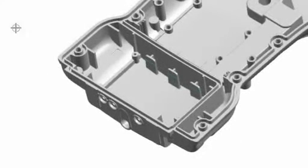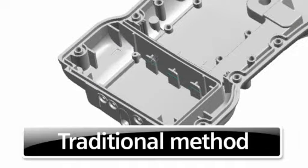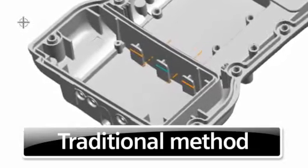Let's look at a more complex geometric case. Take this complex part with over 1,500 features in a traditional history tree. When an engineer wants to make a change to these three ribs, they have to trace how they were created in the original model.